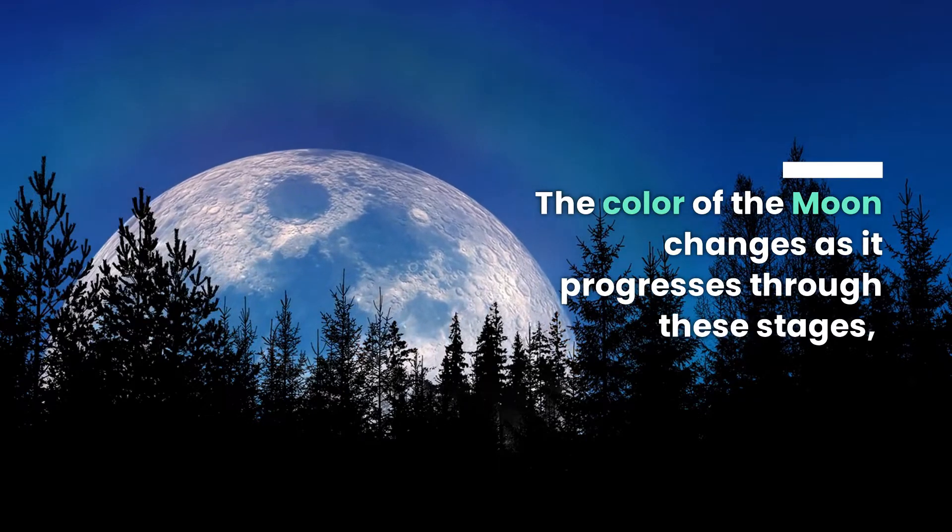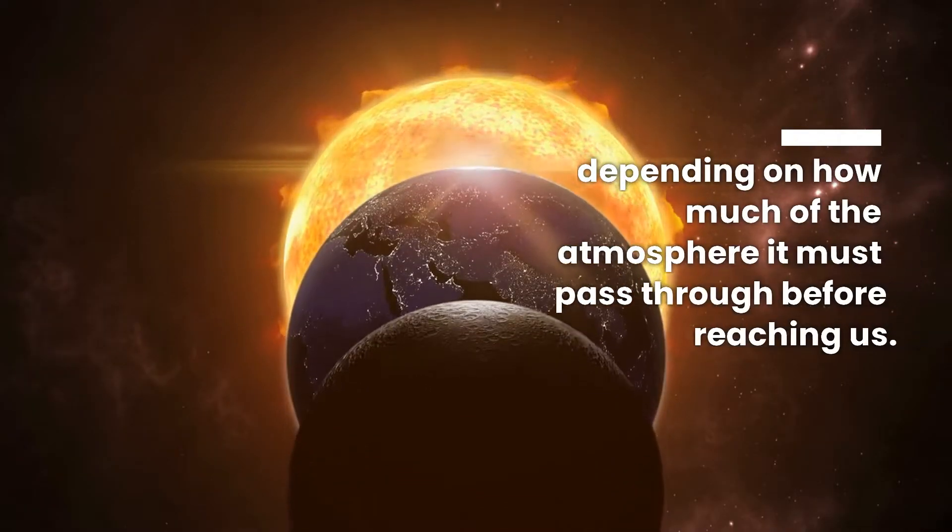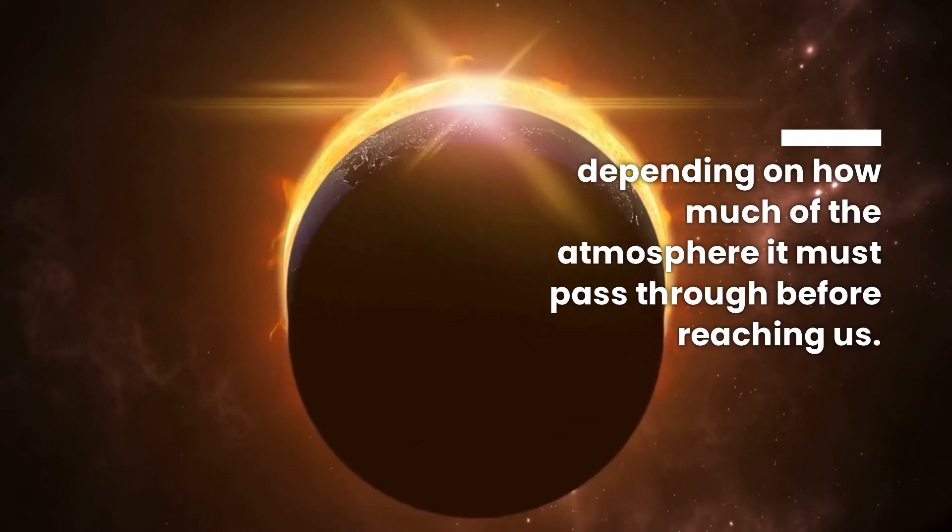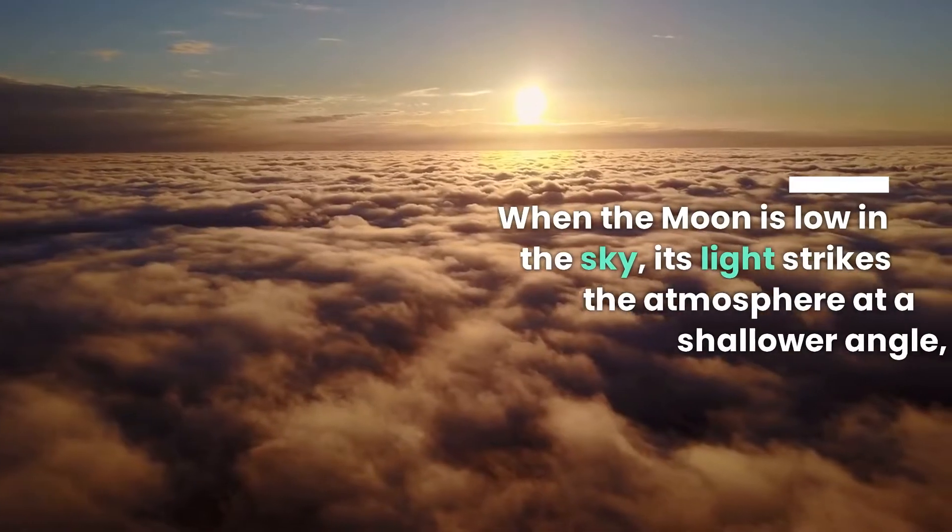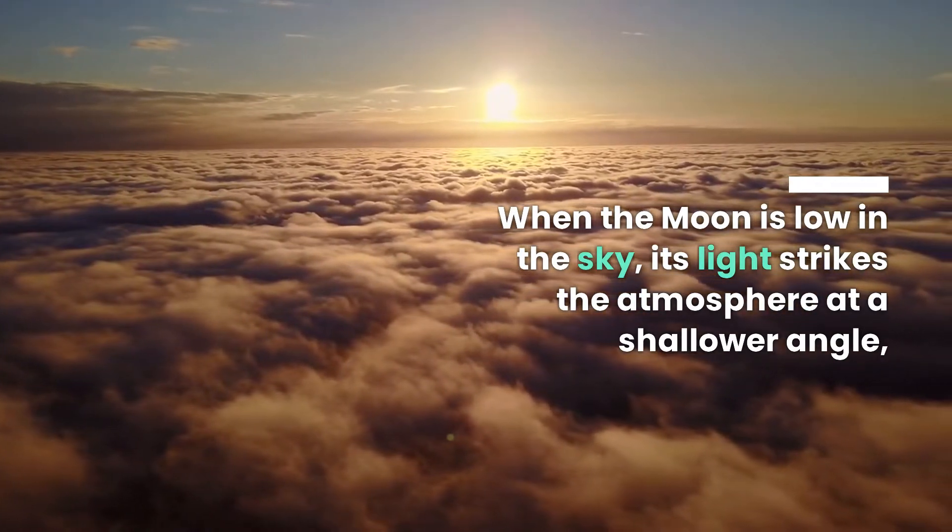The color of the Moon changes as it progresses through these stages, depending on how much of the atmosphere it must pass through before reaching us. When the Moon is low in the sky, its light strikes the atmosphere at a shallower angle.